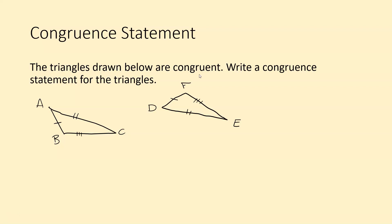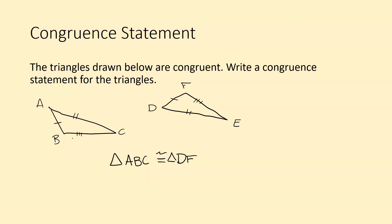Let's practice writing congruent statements. The triangles drawn below are congruent — write a congruent statement for them. I'll start with triangle ABC. It doesn't matter which vertex you begin with, but you must follow the same order for the second triangle. Since I started with A, the corresponding point in the other triangle is D. Following the one tick mark side to B, the corresponding point is F. Then from B to C across the three tick mark side, we go from F to E. So the statement is: triangle ABC is congruent to triangle DFE.